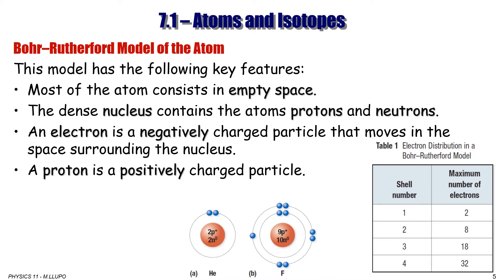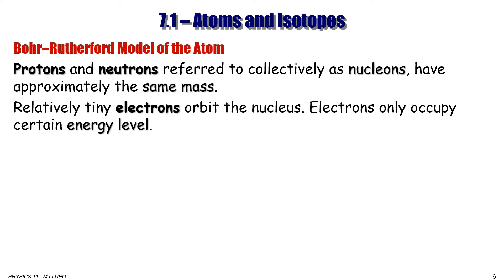Proton is a positively charged particle. And neutrons are uncharged particles that made up the nucleus. Protons and neutrons, referred to collectively as nucleons, have approximately the same mass. Unless you're calculating nuclear energy, this difference in mass is often neglected. Relatively tiny electrons orbit the nucleus in a certain energy level that we call orbits or shells.